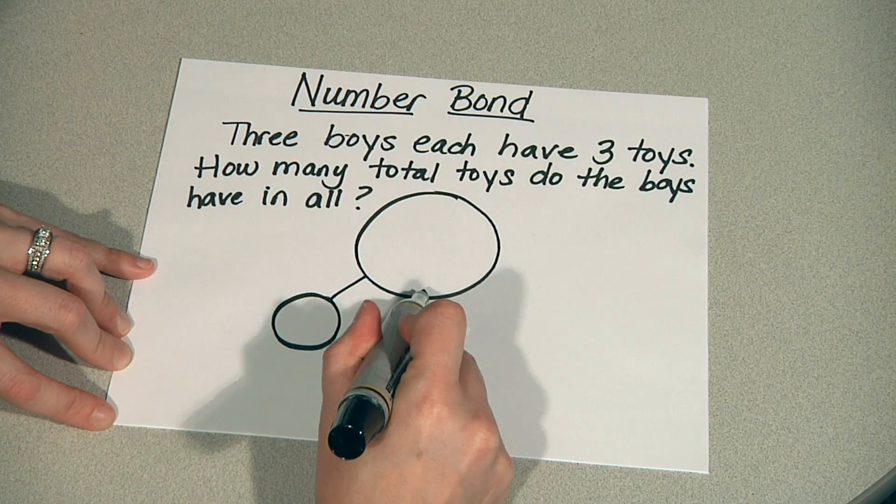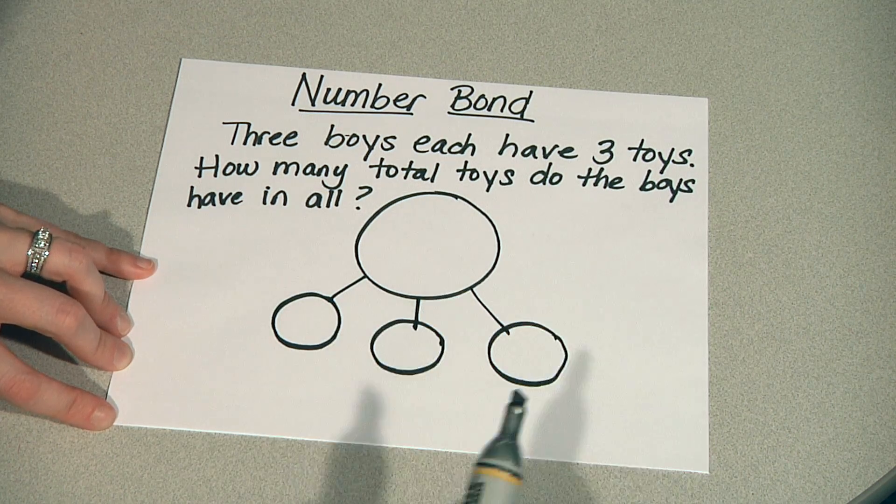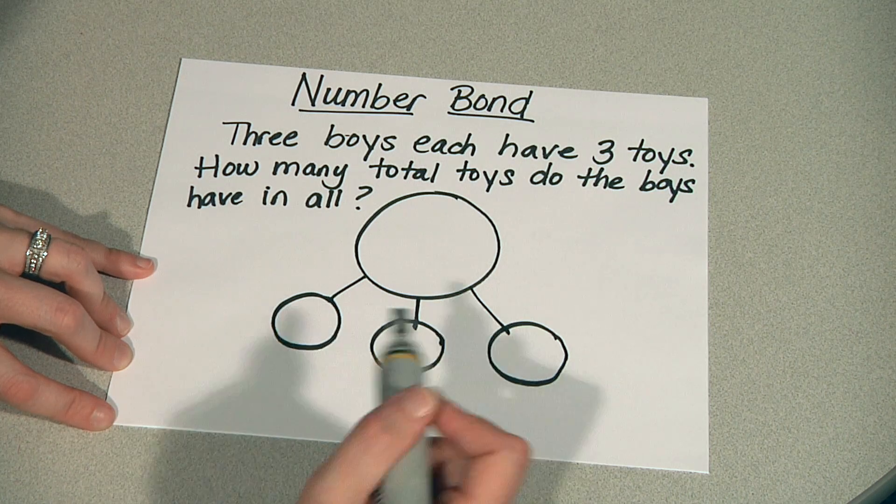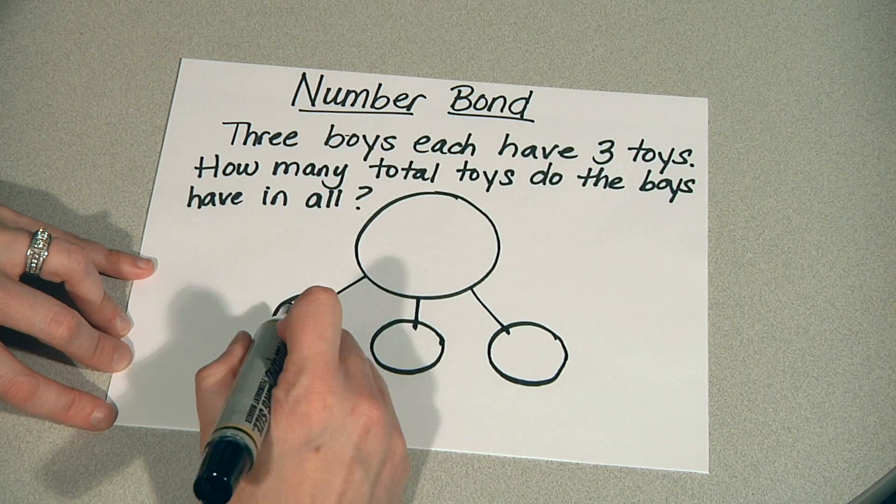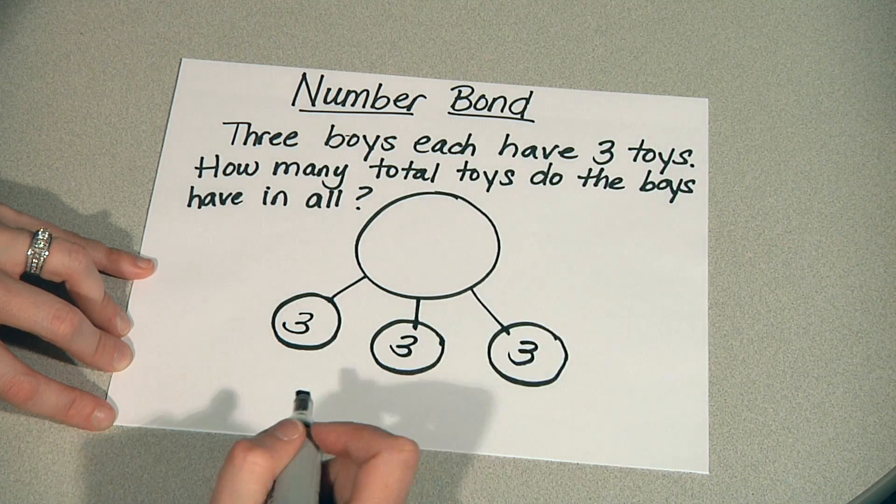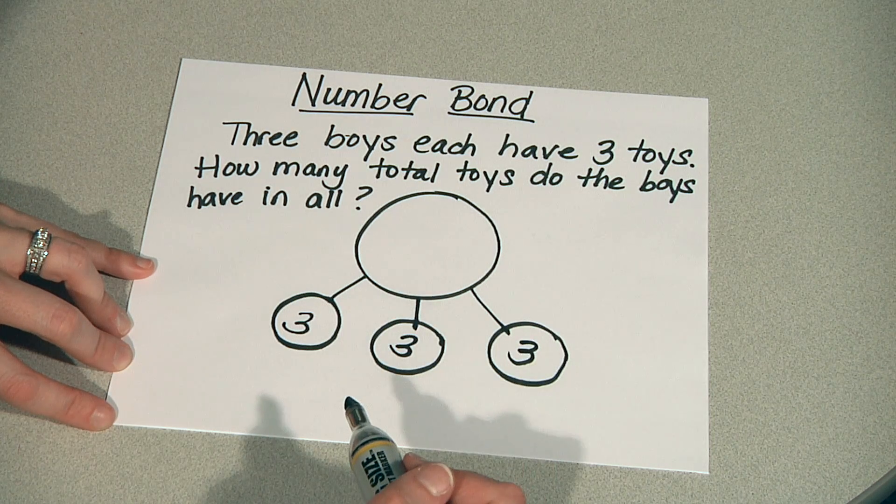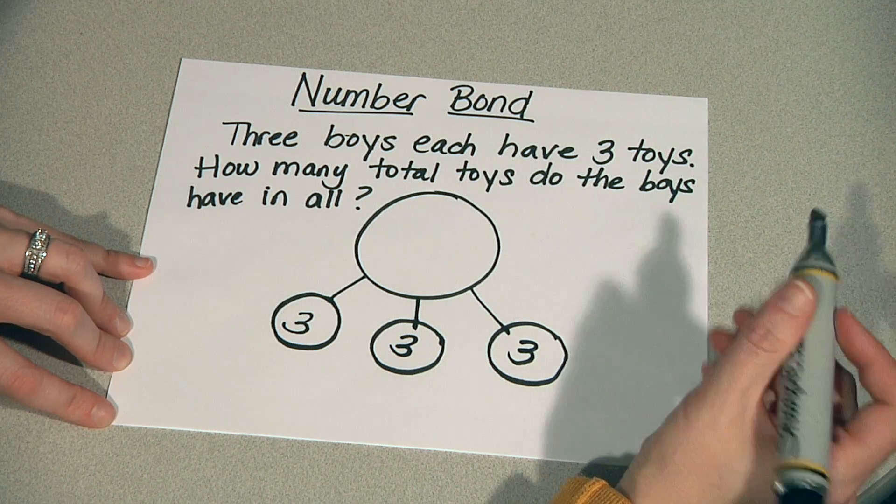We have three, one, two, three boys. Each of these circles represents one boy. Each boy has three toys. This represents three groups of three.